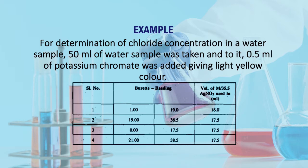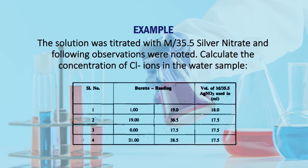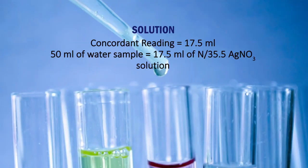Here is an example based on this experiment. For determination of chloride concentration in a water sample, 50 ml of water sample was taken and 0.5 ml of potassium chromate was added, giving a light yellow color. The solution was titrated with M/35.5 silver nitrate and the following observations were noted. The concordant reading of silver nitrate used is 17.5 ml.